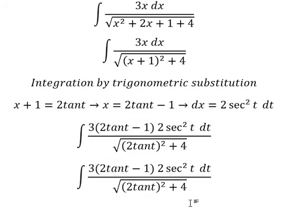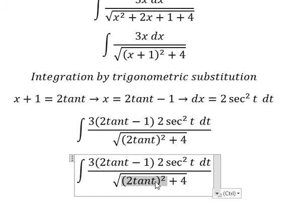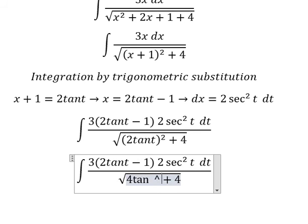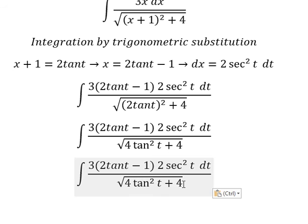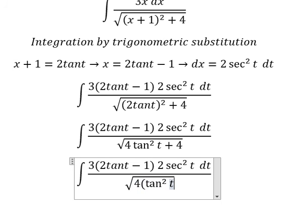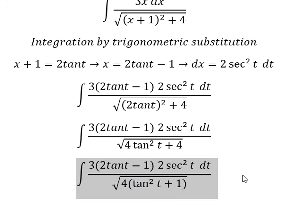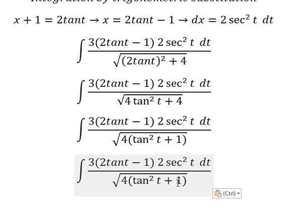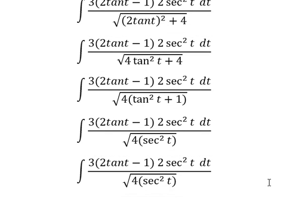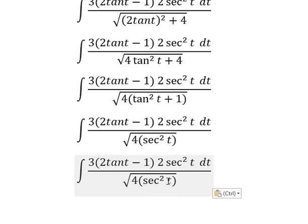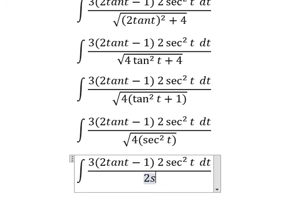Now we need to simplify this. We have four times tan squared t. The four we can factor out. This becomes secant squared t. The square root of four secant squared t gives us two secant t.